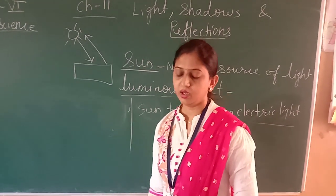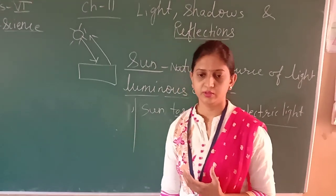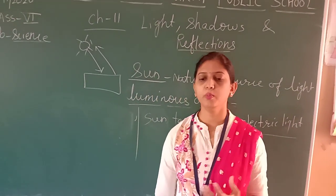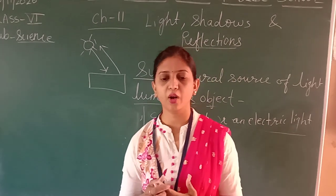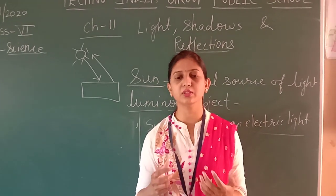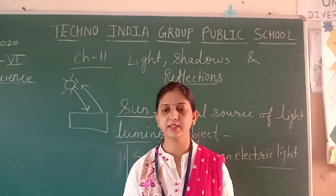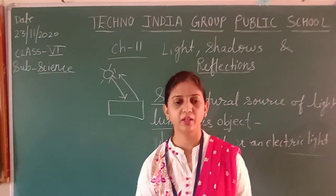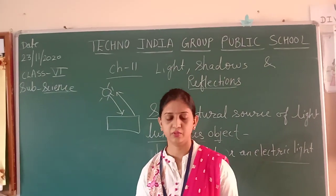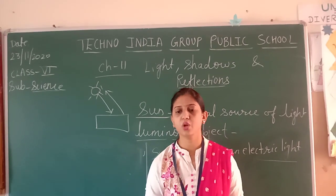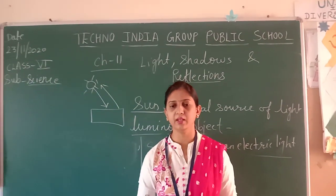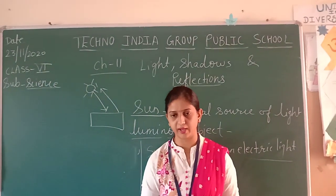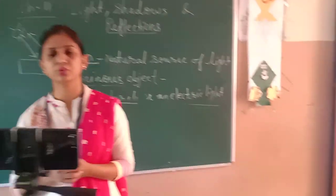Is it clear to you how we can see any object? When the room is dark, we cannot see any object, because light rays do not pass into that room. In that dark room, whatever objects are present, we cannot see them. The reason is that light does not fall on those objects, so the light cannot reflect back, and therefore we cannot see those objects.